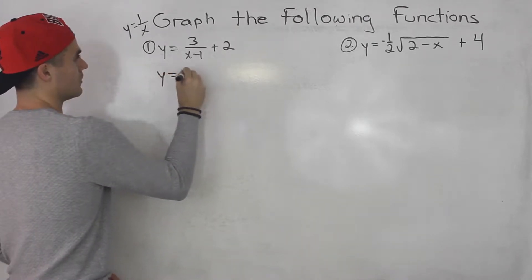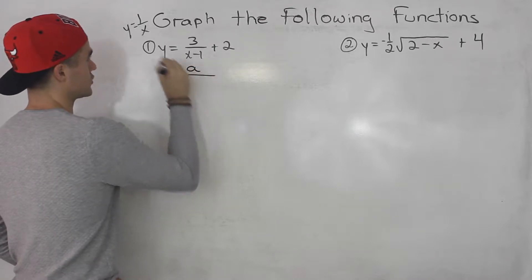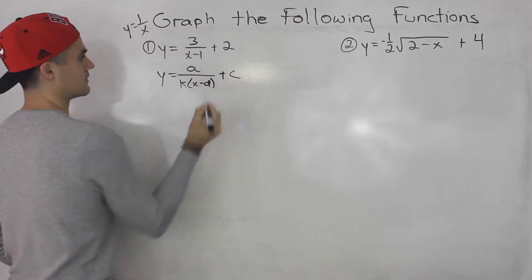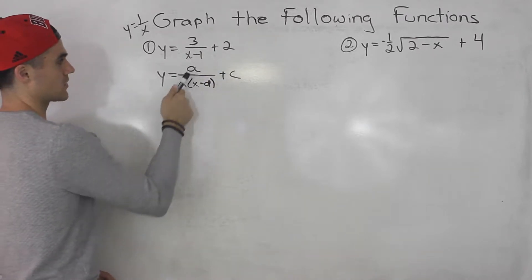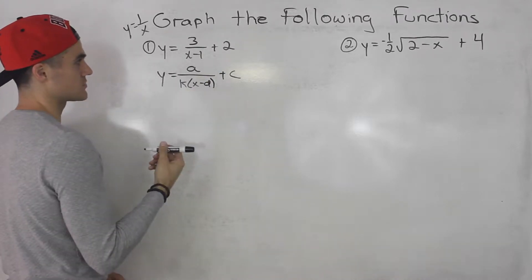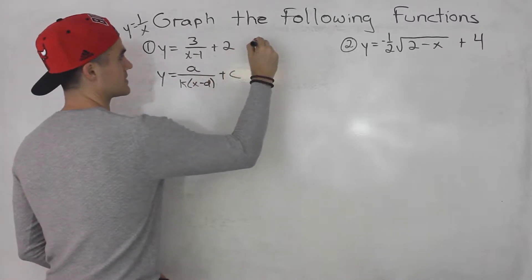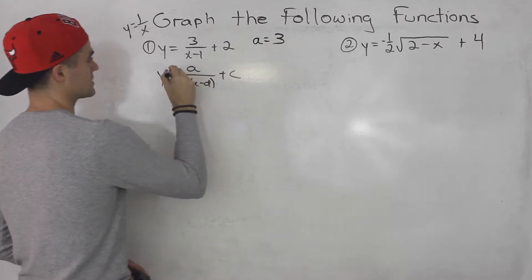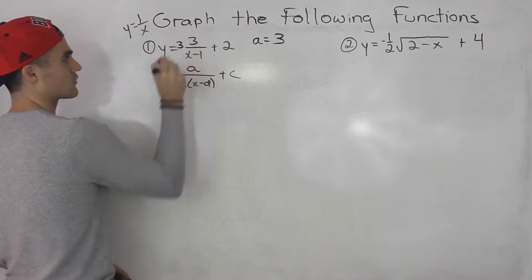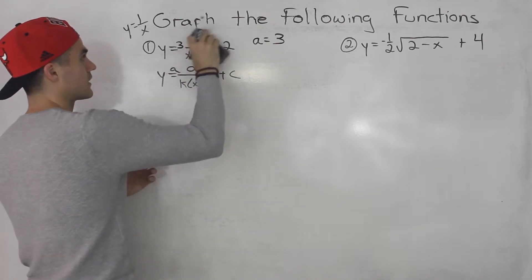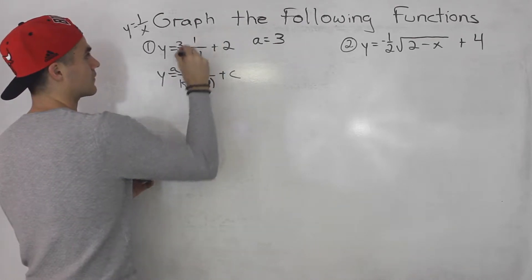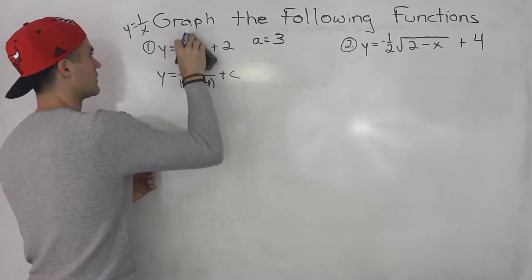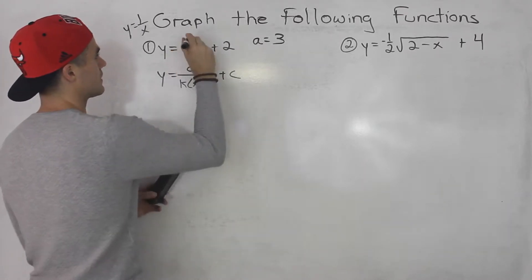In general, the format for a transformed reciprocal function looks like a over k(x minus d) plus c. That's where the a, k, d, and c values are. For this function, the a value is the numerator, which is 3. Sometimes the a value can also be written in front, but either way the a value is 3 in this case.